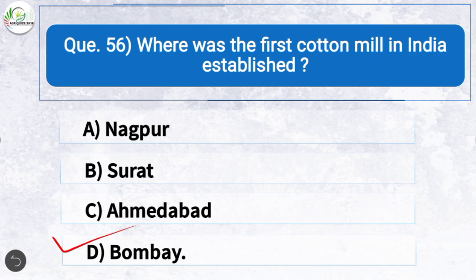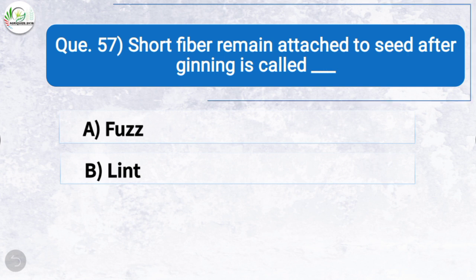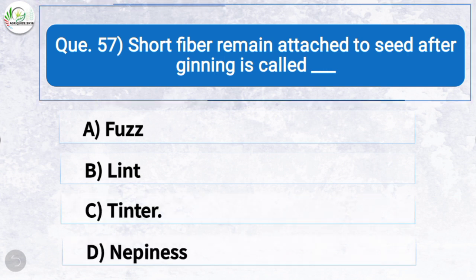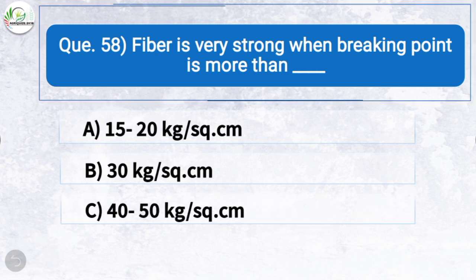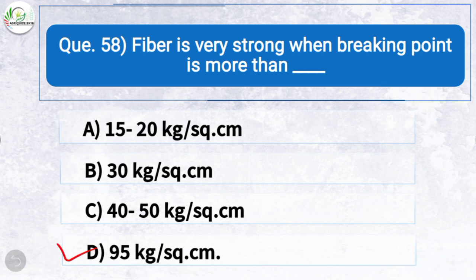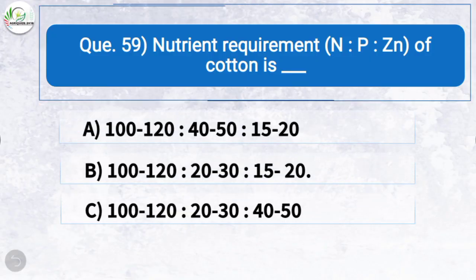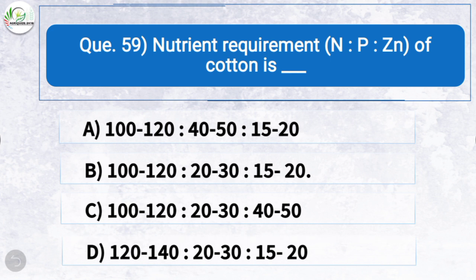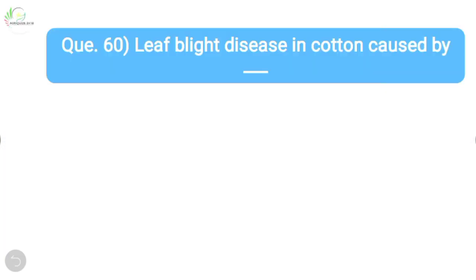Question fifty-six: Where was the first cotton mill in India established? The correct answer is option D: Bombay. Question fifty-seven: Short fiber remaining attached to seed after ginning is called — the correct answer is option C: tinter. Question fifty-eight: Fiber is very strong when the breaking point is more than — the correct answer is option D: 95 kg per square centimeter. Question fifty-nine: Nutrient requirement (N:P:Zn) of cotton is — the correct answer is option B: 100–120 : 20–30 : 15–20.